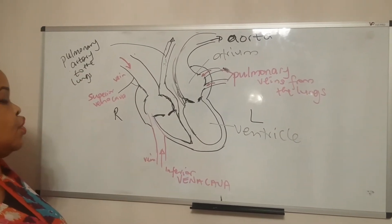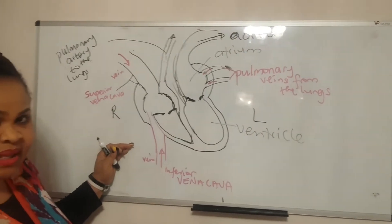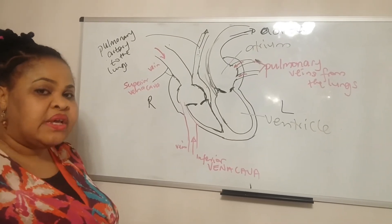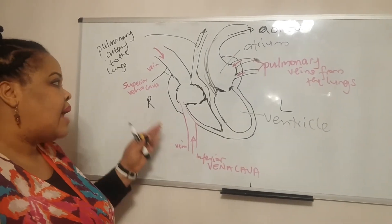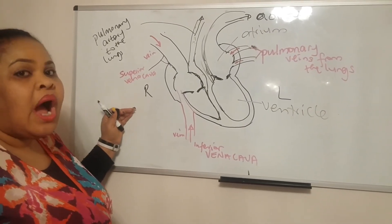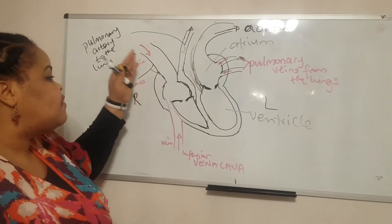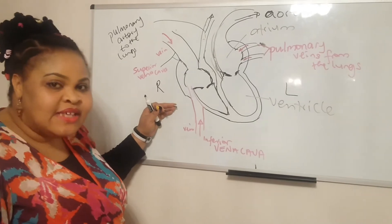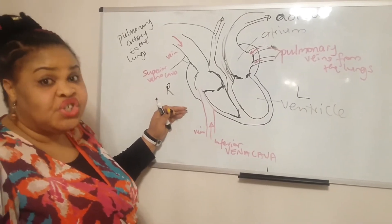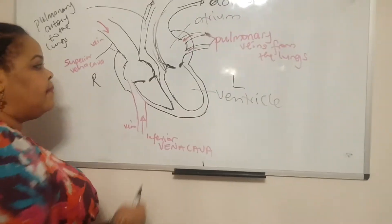The pulmonary artery takes blood away from the heart to the lungs. The blood that comes into the right atrium through the vena cava is deoxygenated — it is very rich in carbon dioxide, because when blood carries oxygen around the body it also picks up CO2 as waste. That blood must go to the lungs, where the CO2 is exhaled and the blood picks up oxygen again.